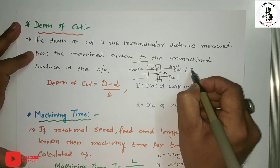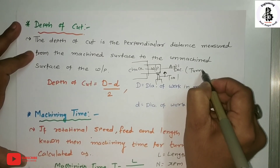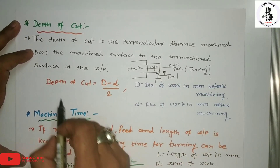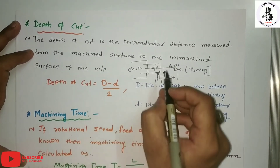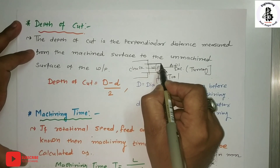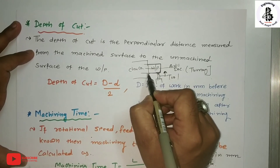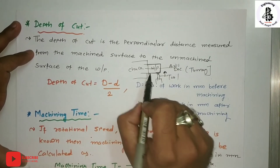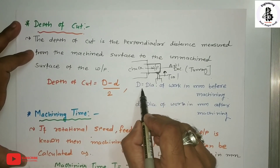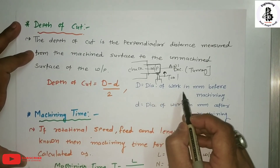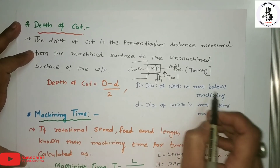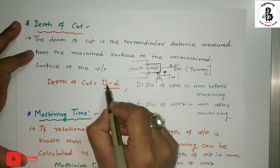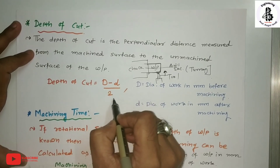Depth of cut depends on the initial and final diameters. Capital D represents the diameter of the workpiece in mm before machining, and small d is the diameter after machining. So the depth of cut = (D − d) / 2.